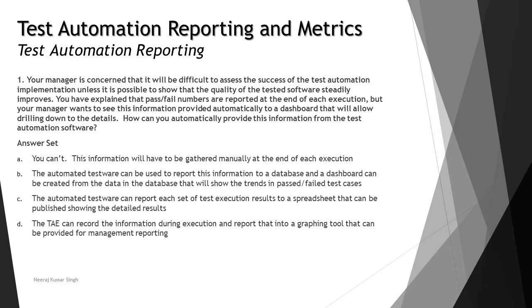We have discussed this in detail in earlier tutorials — we understood how reports can be produced for different stakeholders. Let's look at the options. Option A: you cannot — this information will have to be gathered manually at the end of each execution. We know there is a way to present it to the dashboard, called publishing the report. Option B: the automated test framework can be used to report this information to a database, and a dashboard can be created from the data in that database, showing the trend in pass or fail test cases. This sounds most relevant technically.